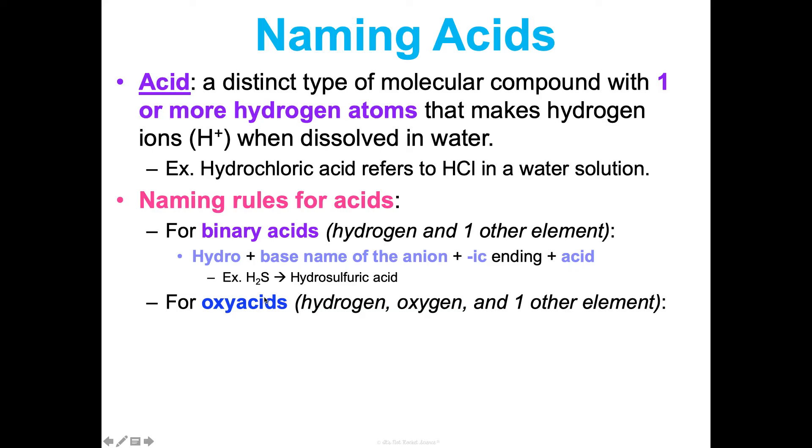Now, oxyacids are different. That's when you have hydrogen, oxygen, and then one other thing. So now, if the oxyanion has an I-T-E ending, so go back and look at your polyatomic ion. If it's sulfite, chlorite, something like that, then you'll use the base name, and then you'll add -ous. So chlorite, you'd use the chlor, and then ous, chlorous, and then acid. So chlorous acid, or sulfurous acid, for sulfite acid, that kind of thing. So H2SO3. So it's hydrogen, it's oxygen, and one other element. We look up the anion, which is SO3, which is sulfite. It has an I-T-E ending. So we take the sulfur, and then we add the -ous, sulfurous acid.